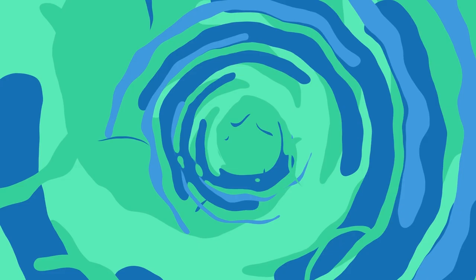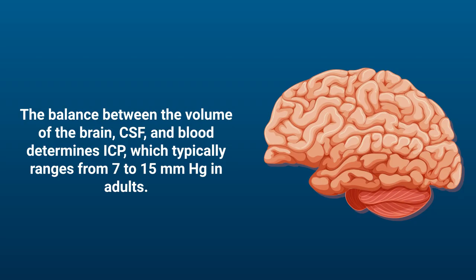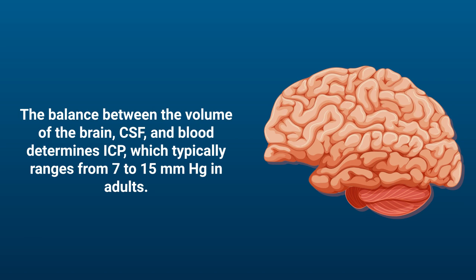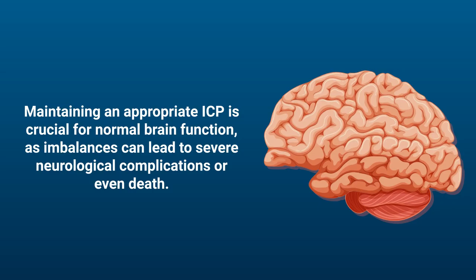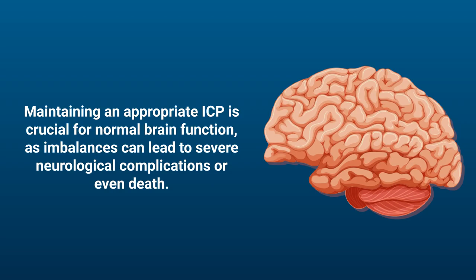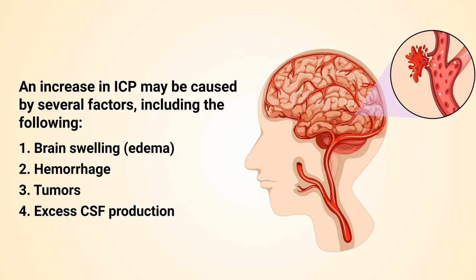The balance between the volume of the brain, cerebrospinal fluid, and blood determines intracranial pressure, which typically ranges from 7 to 15 millimeters of mercury in adults. Maintaining an appropriate intracranial pressure is crucial for normal brain function, as imbalances can lead to severe neurological complications or even death.